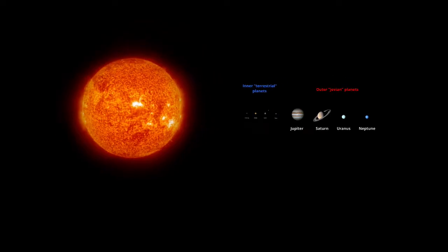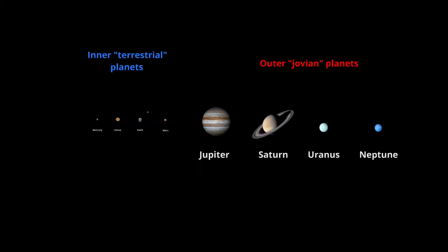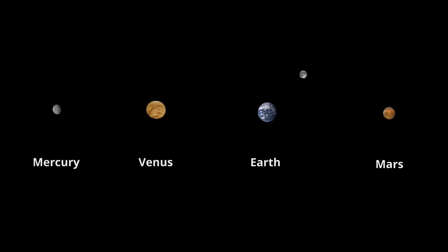As seen here, the planets can be divided into two major classes: there are the inner terrestrial planets and the outer Jovian planets. The terrestrial planets are relatively small. Mercury, Venus, Earth, Mars — these are the rocky planets. They're basically big round rocks, each coated with a relatively thin atmosphere.